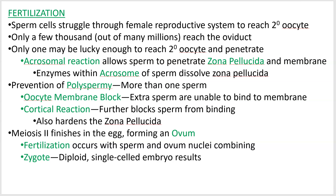you can only get a few thousand of them possibly even getting to the oviduct. The stars have got to align. There's got to be an oocyte traveling down the oviduct. It's got to be the right time of the month, the right oviduct. It's got to be functional sperm cells, it has to be a viable egg cell. So there's a lot of things that have to take place. And if one egg and one sperm are lucky enough, they may meet — and they may meet in the oviduct. So that's where the sperm cell and the secondary oocyte meet.